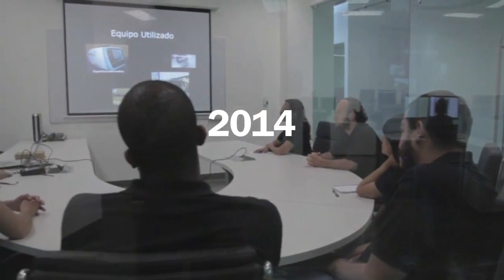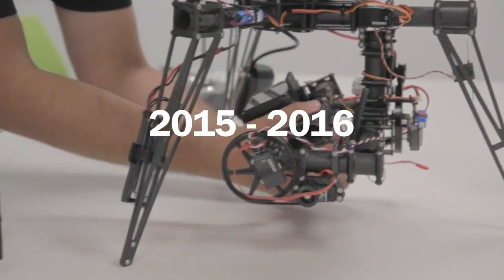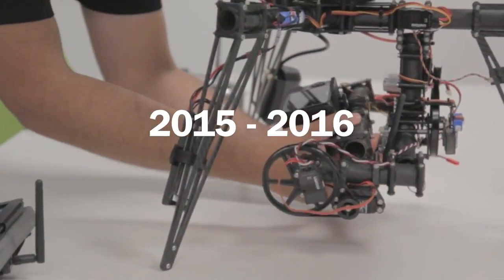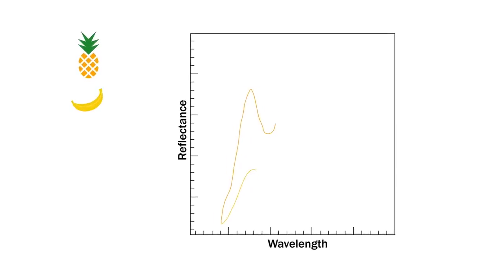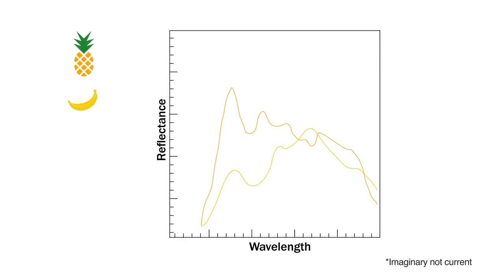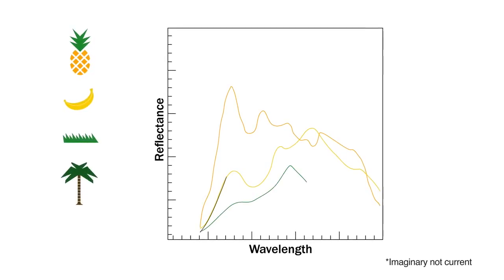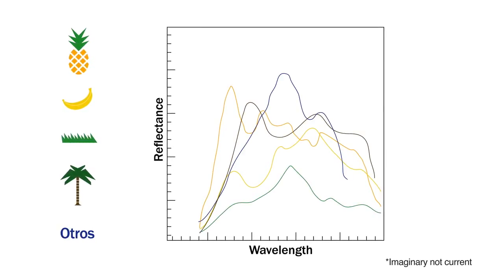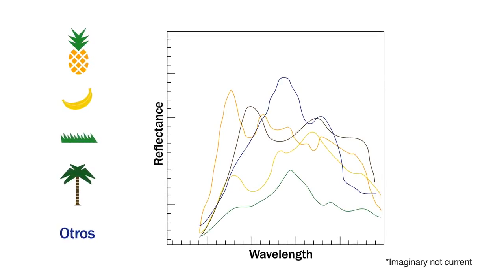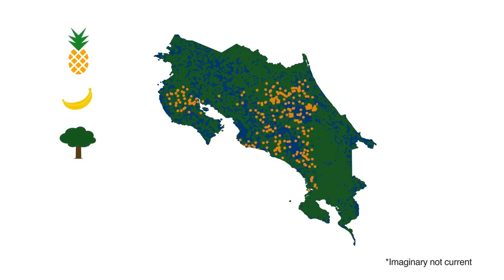It began in 2014 with a preliminary study. During 2015, pineapple and banana spectral signatures are being developed, and new spectral signatures are to be incorporated in the following years, including pasture, palm oil, and other crops. Once the spectral signatures for different crops are finalised, the total area under cultivation per crop is recorded as a baseline, which is then monitored annually.